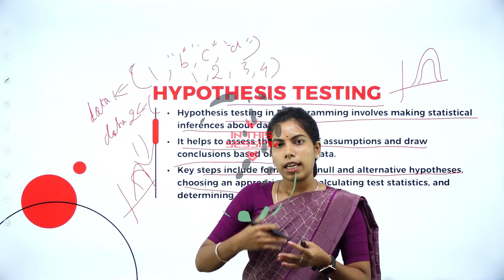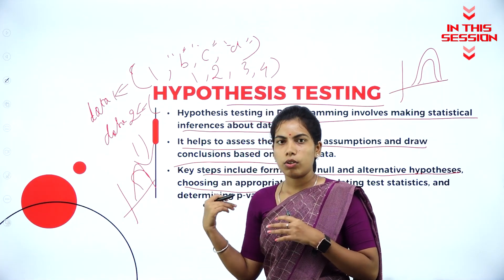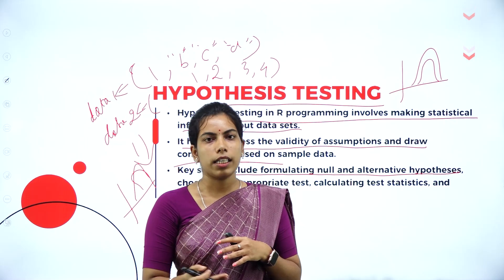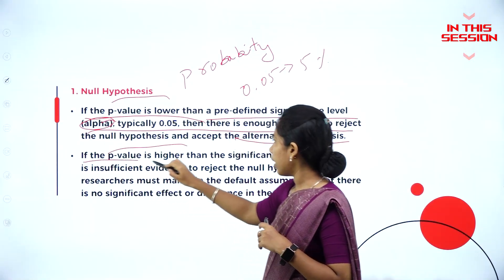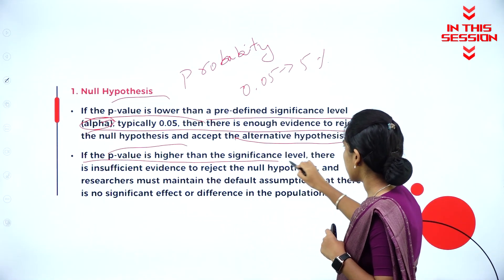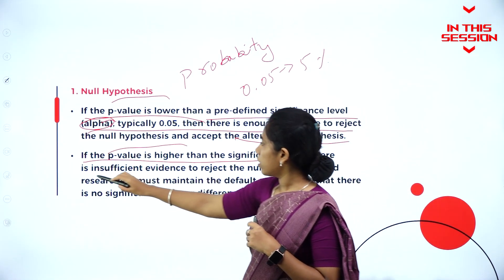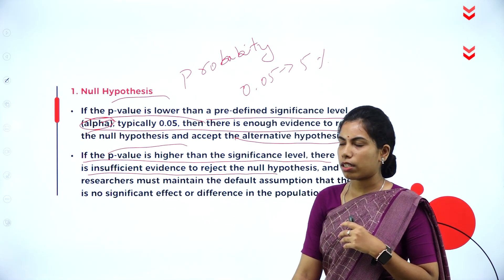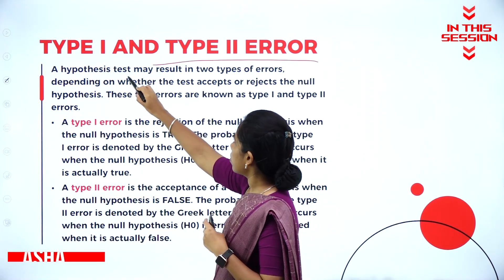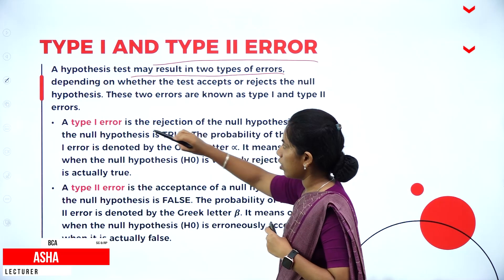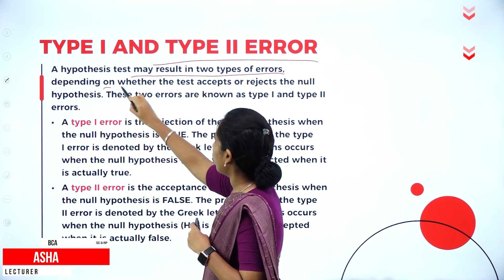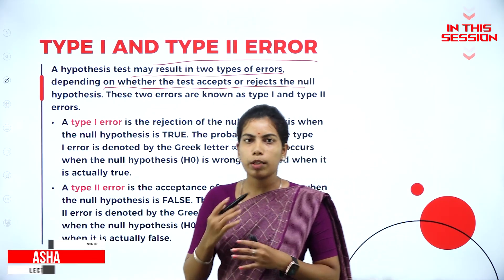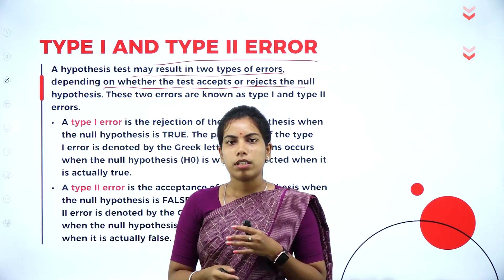After conducting the test, we can conclude which belongs to the null hypothesis or the alternative hypothesis. If the p-value is higher than the significance level, there is insufficient evidence to reject the null hypothesis. Hypothesis test may result in two types of errors, depending on whether the test is accepted or rejected, which is completely based on the null hypothesis.